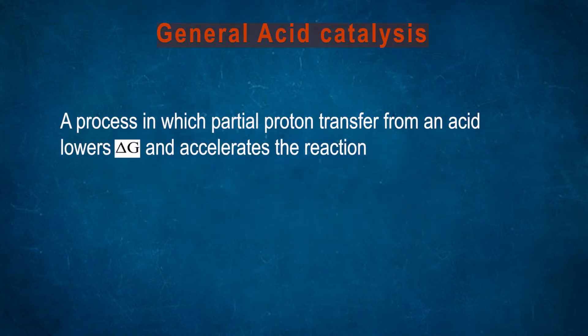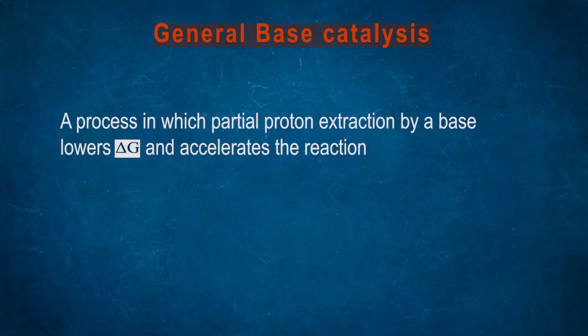In general acid catalysis, it is a process in which partial proton transfer from an acid lowers delta G and accelerates the reaction. General base catalysis is a process in which partial proton extraction by a base lowers delta G and accelerates the reaction.